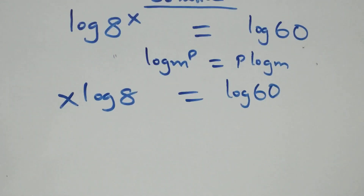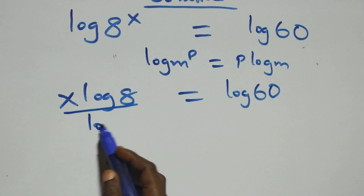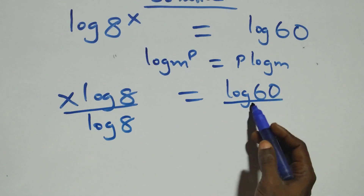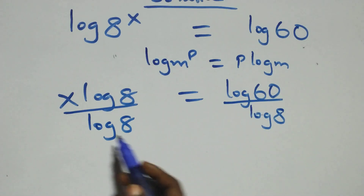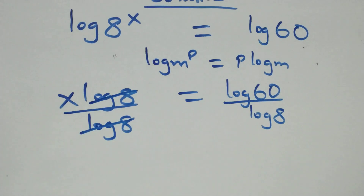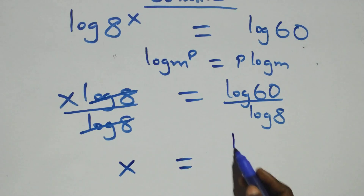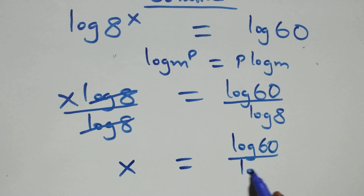The next step here, we divide both sides by log eight. At this, we divide each side by log eight. Log eight cancels each other and we have x left, which is equal to log sixty over log eight.